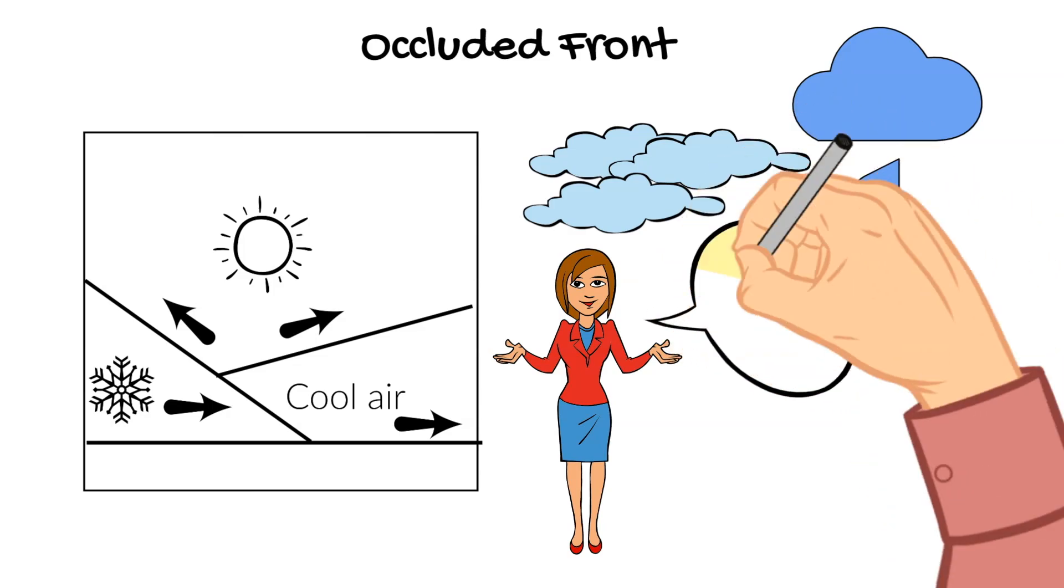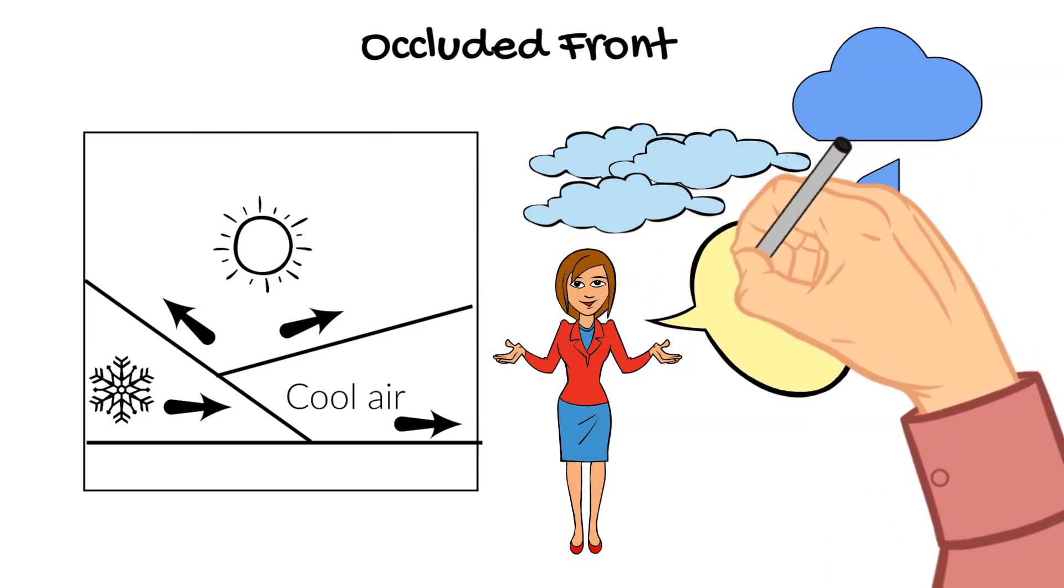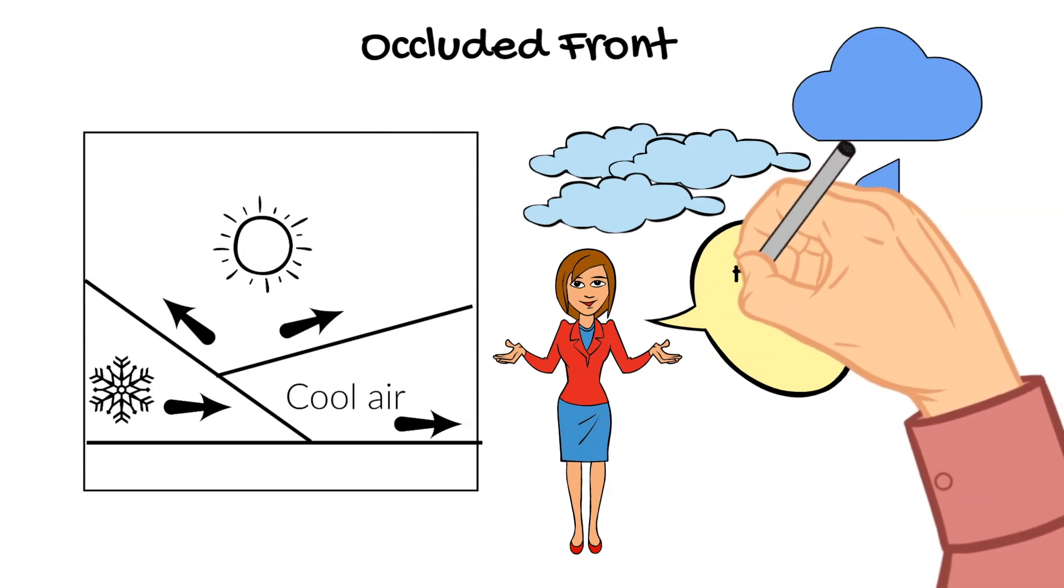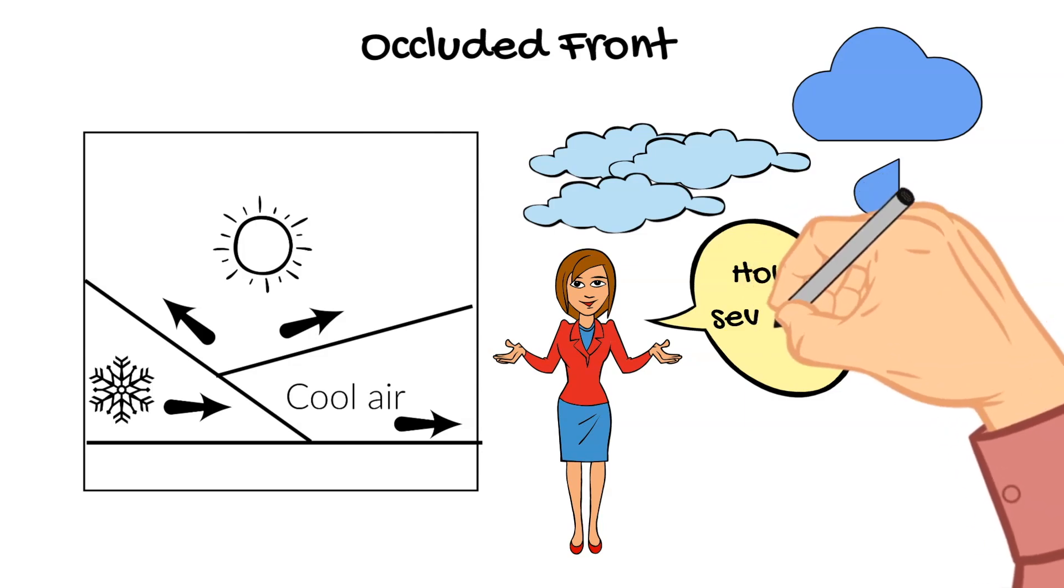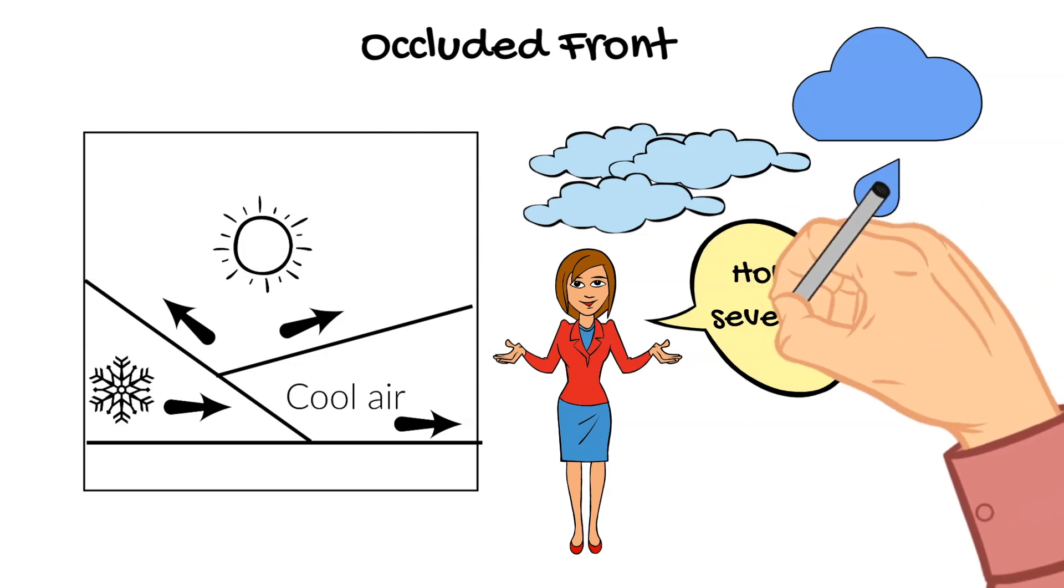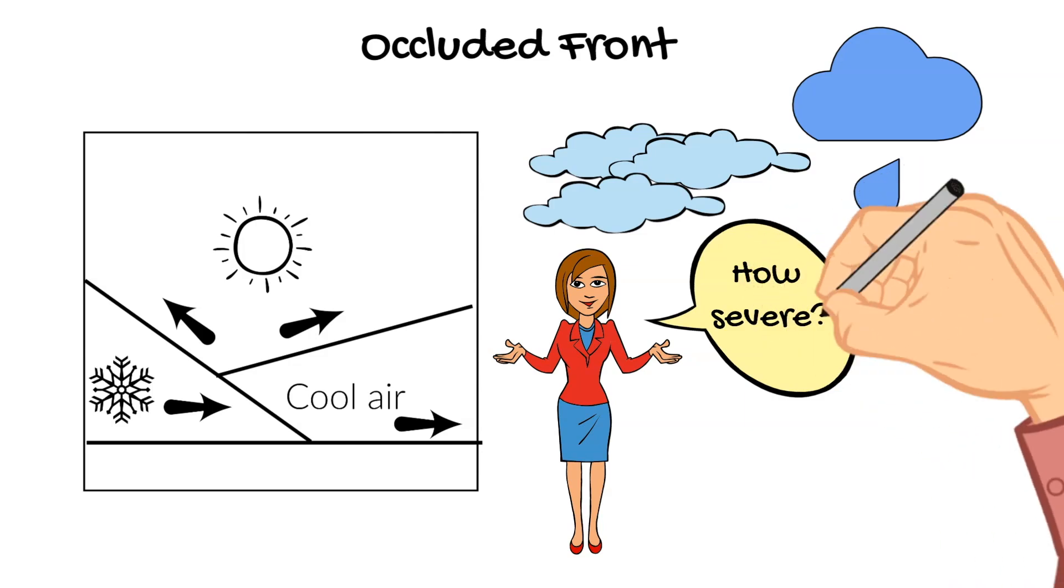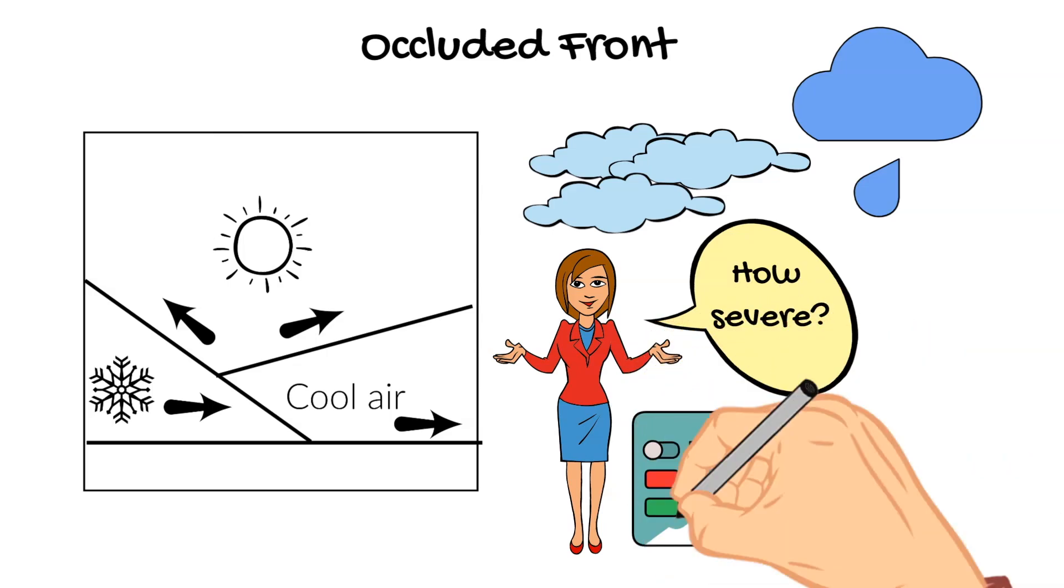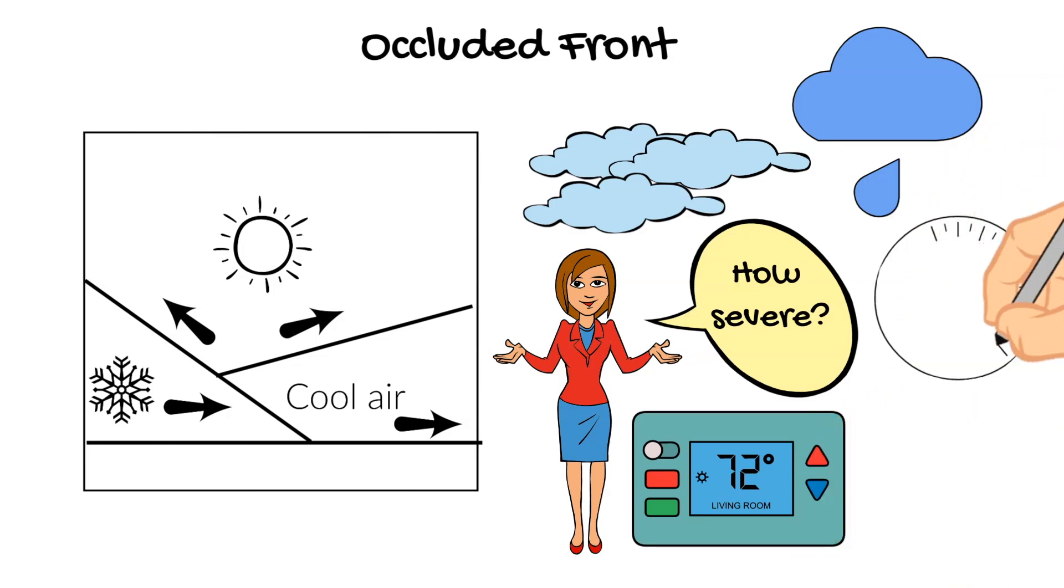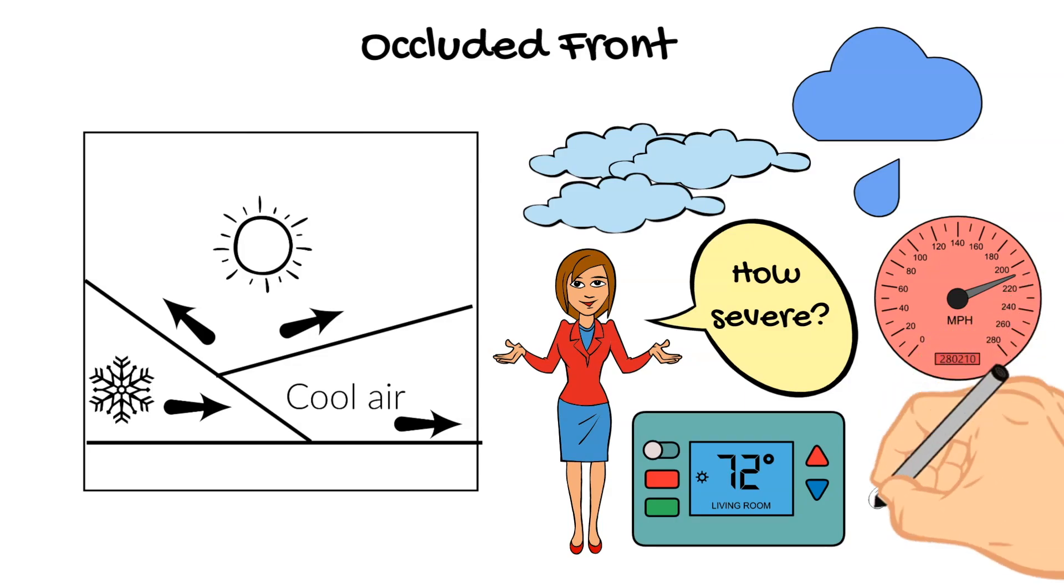Like I said, occluded fronts can bring a range of different types of weather. It can be rain or thunderstorms or snow or a mixture of rain and snow. And how severe this weather is really just depends on the temperature differences between the warm and cold air masses and at what speed they are moving. This arrival of an occluded front is typically marked by a change in wind direction, air temperature, and barometric pressure.